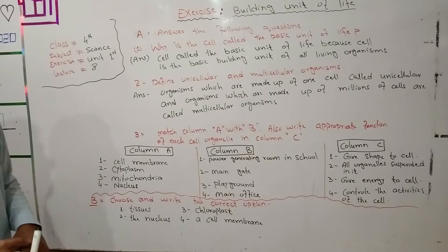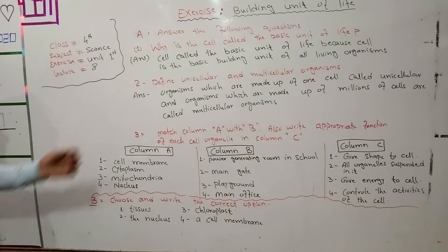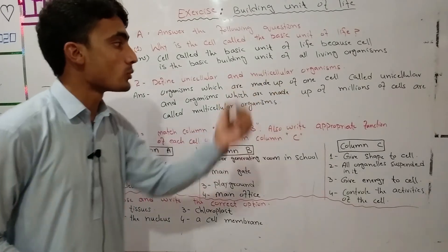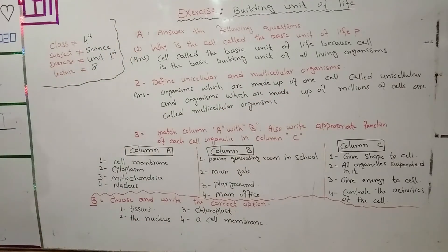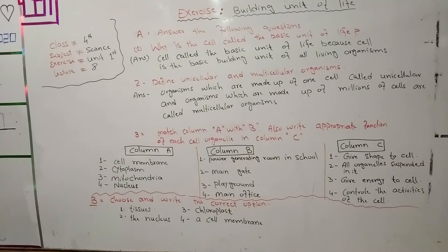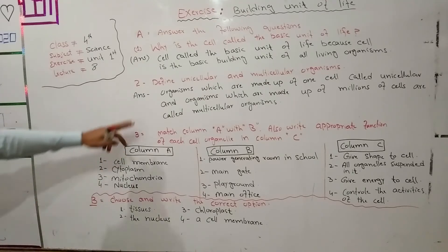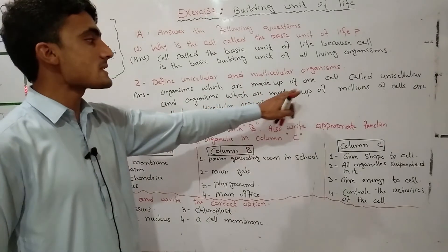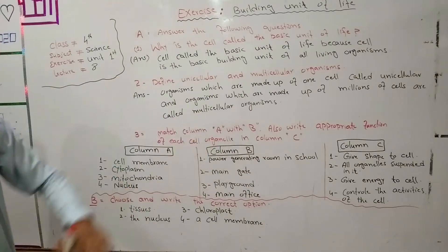Question number 2: define unicellular and multicellular organisms. Answer: organisms which are made of one cell are called unicellular organisms. And organisms which are made of millions of cells are called multicellular organisms. Simply, if you have a whole single cell, those are unicellular organisms; if you have millions of cells, those are multicellular organisms.